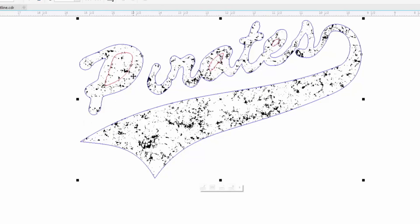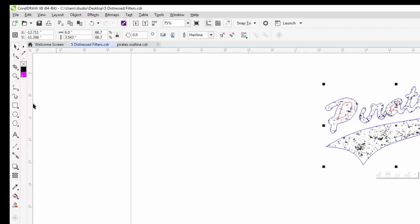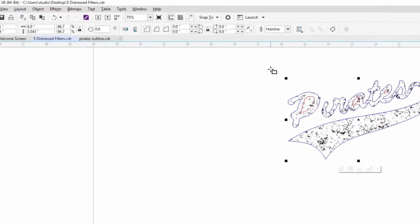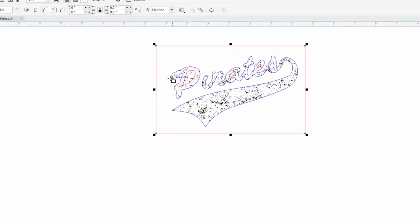And then you can still see that our red vector cuts and our blue kiss cut is still in place. So from here, all we have to do is create a vector cut box around it to cut the transfer out, and then we're ready to send it off to the laser.